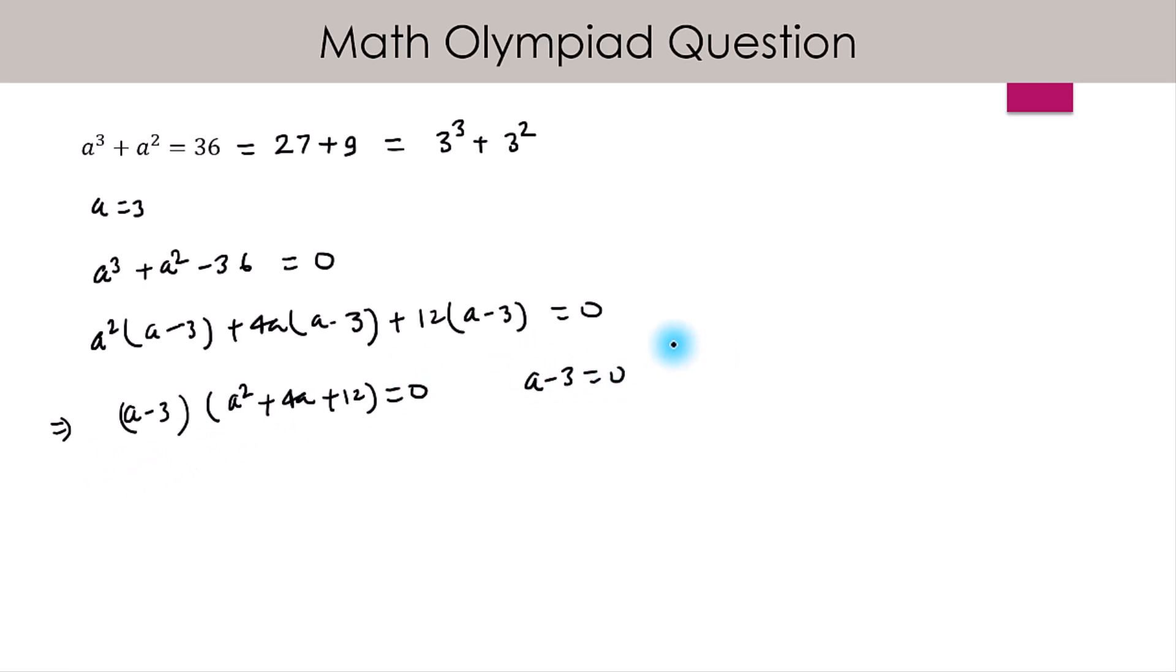which we already know gives a = 3. And this term is also 0, so a² + 4a + 12 = 0. Now we have to solve for the value of a.